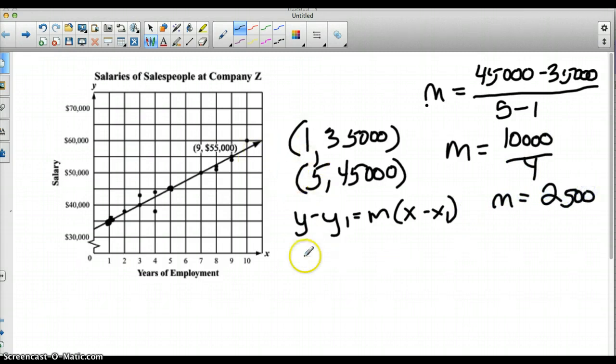So then you're going to choose one of your points. So remember, you have y minus, we'll use the 35,000, equals my slope I just found, which was 2,500, times x minus 1, because I chose to use this ordered pair.